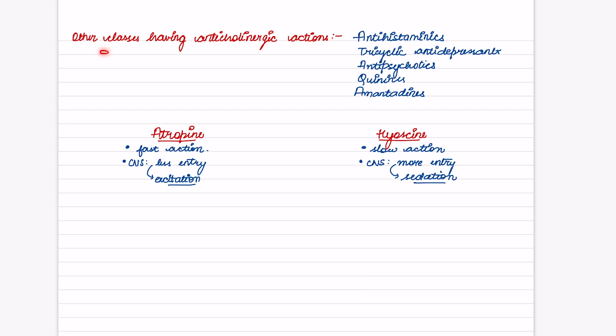Which are some other classes that have anticholinergic actions? These include antihistamines, tricyclic antidepressants, antipsychotics, quinidines, and amantadine. What is the difference between atropine and hyoscine? Atropine action is faster and hyoscine action is slow. Atropine's CNS entry is less so it causes excitation. Hyoscine CNS entry is more and it causes sedation.